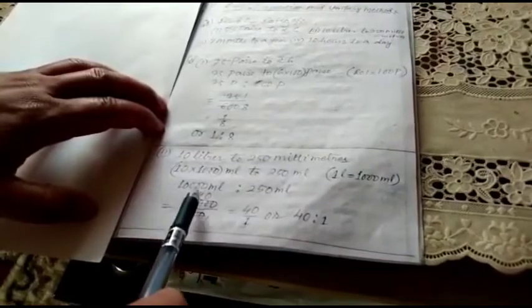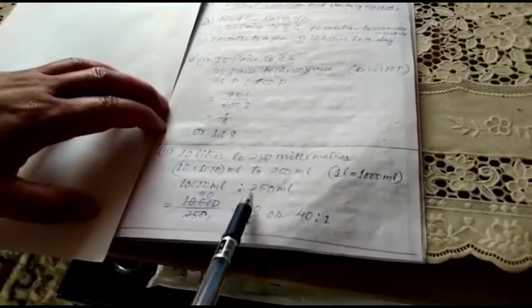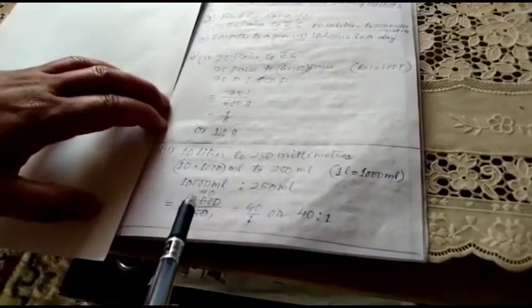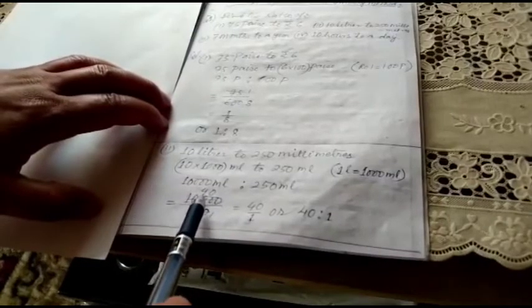Now both are in the same unit: 10,000 milliliters is to 250 milliliters. Let's write in fraction form: 10,000 by 250. 250 ones are 250, 250 40s are 10,000. So the ratio is 40 by 1, or 40 is to 1.